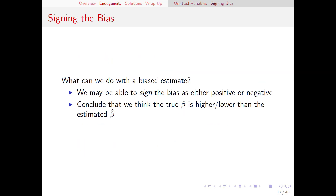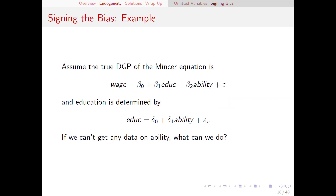So we've established that in many regressions you might run, we could end up with a biased estimate. But what can we do with these biased estimates? We can use this to predict whether we think that the true beta we're trying to estimate will tend to be higher or lower than the estimate that we got. Let's return to the Mincer equation. Let's assume that the true data generating process is wage equals beta0 plus beta1 times education plus beta2 times ability. We mentioned earlier that education and ability are related. Let's suppose that this relationship is described by the equation: education equals delta0 plus delta1 times ability plus epsilon_a.